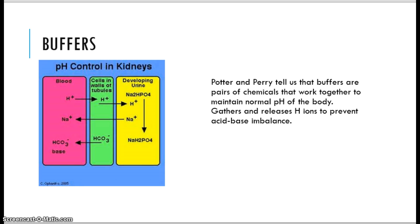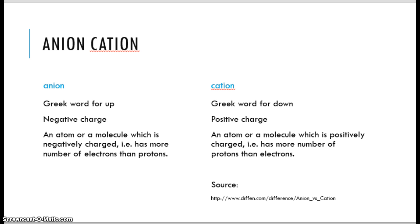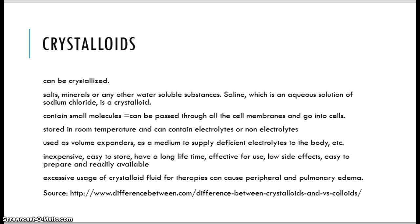A buffer uses pairs of chemicals that work together to maintain pH. An anion and a cation: anion is a Greek word meaning up, it has a negative charge with more electrons than protons. A cation means to tear down or break down — I think of a construction worker with a caterpillar smashing a house. Cation has a positive charge with more protons than electrons. That's in the electrolyte part of chemistry we're discussing.